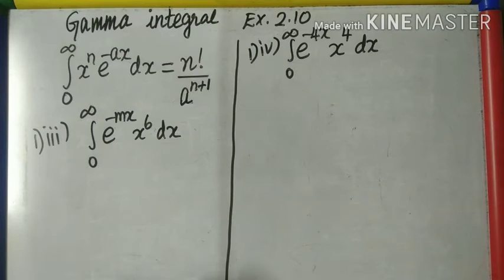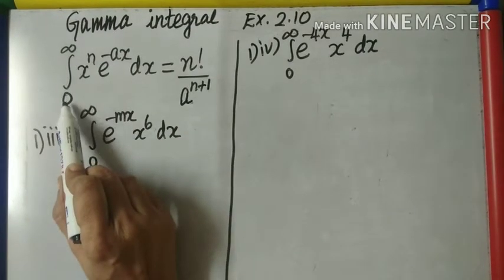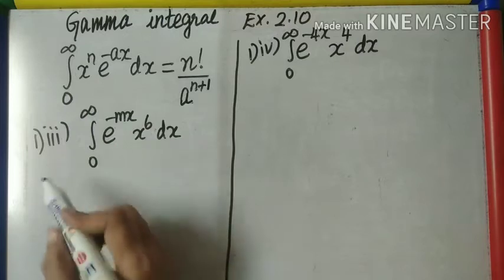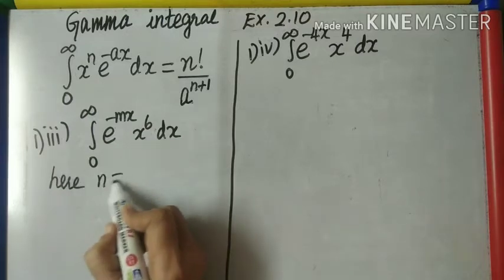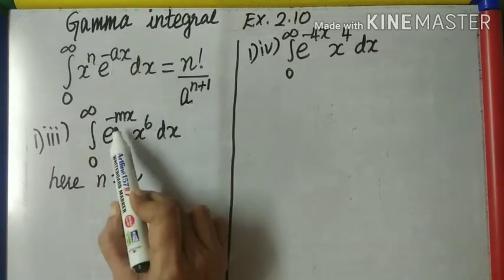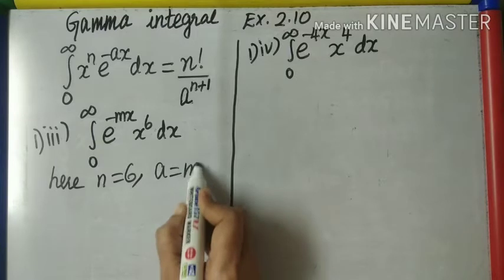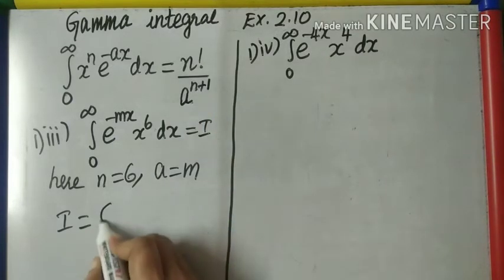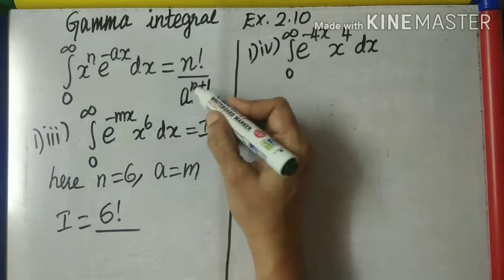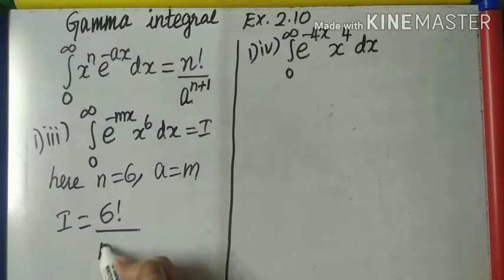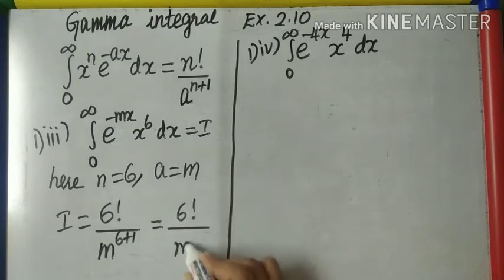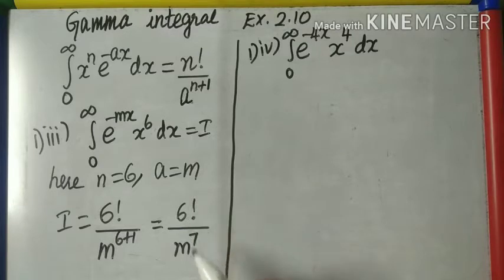Question number 1, subsection 3. We are using the same formula — limits 0 to infinity, x to the power 6, so n equals 6. E to the power negative mx, so a equals m. Applying the formula, call this I: I equals n factorial over a to the power n plus 1, which is 6 factorial over m to the power 7. Either leave the answer like this or find 6 factorial and write the final answer.